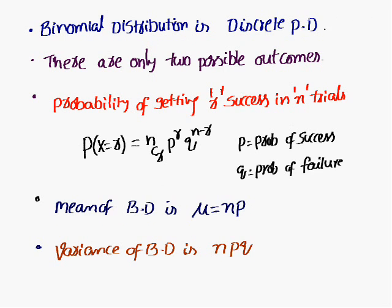Binomial distribution is a discrete probability distribution. When you can use the binomial distribution means there are only two possible outcomes. When you come across two possible outcomes, then we can use the binomial distribution.